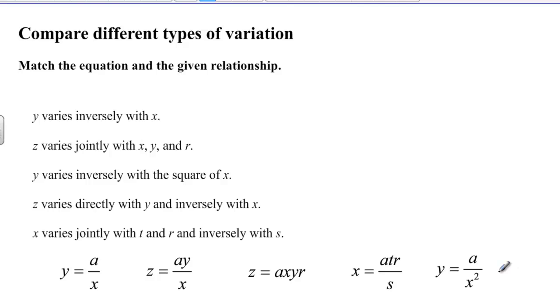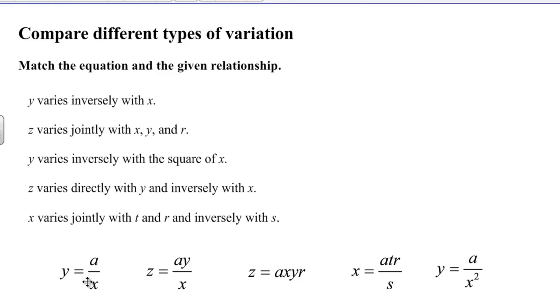The last thing is sometimes we have variation that isn't just direct or joint or inverse, and so we need to match these up. When I say y varies inversely with x, that's pretty simple. That's y equals a over x. z varies jointly with x, y, and r. Well that means I have 4 variables there and there's joint variation, multiplication. If y varies inversely with the square of x, here's inverse variation and here's x squared. And so now we might say y equals a over x squared.